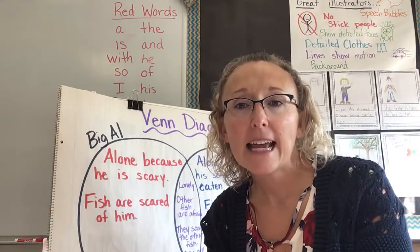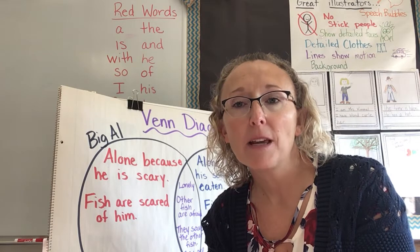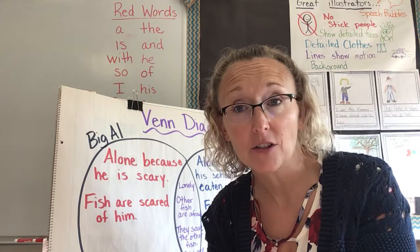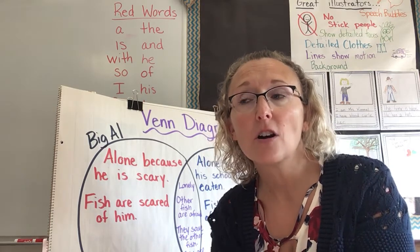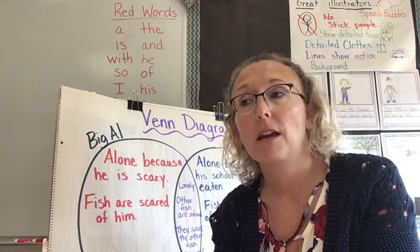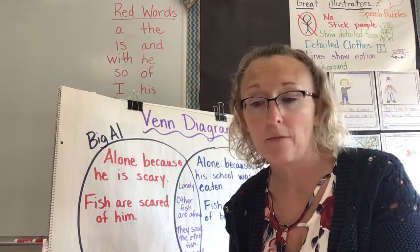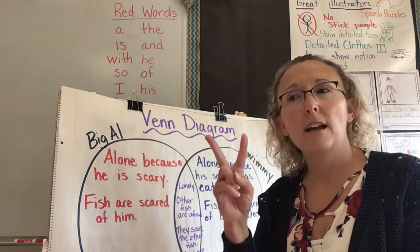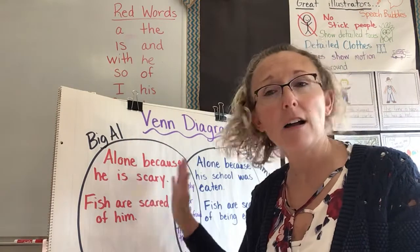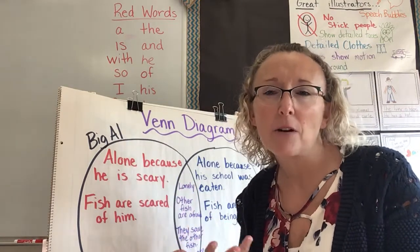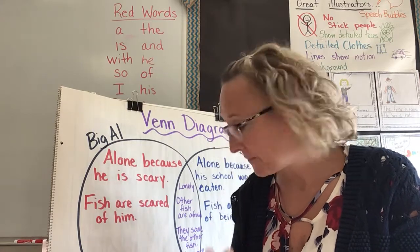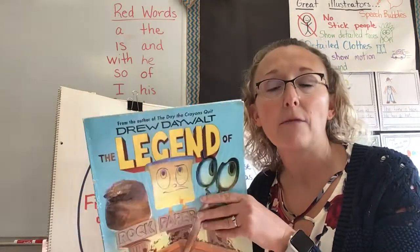Hi boys and girls. Today in reading we are going to be making connections between two texts and focusing on the characters. The characters are who the book is about — it can be a person, it can be an animal, or it can be a thing. We're going to make connections between two characters in two separate books. I'll be talking through the Venn diagram kind of like we did yesterday, but I'm mostly just going to read you a brand new book and then we're going to compare it to a book we've already read.